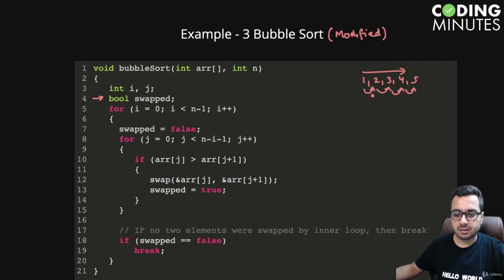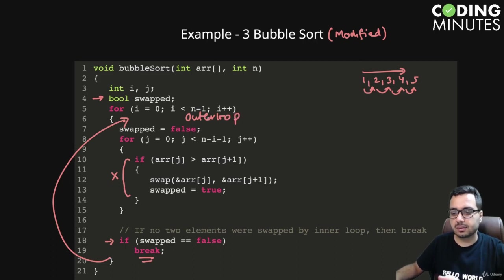The answer is none of these conditions is true, so this if block will not execute. What will happen? We will come out of this loop and check if swapped is true, then break. We are basically going to break the outer loop.